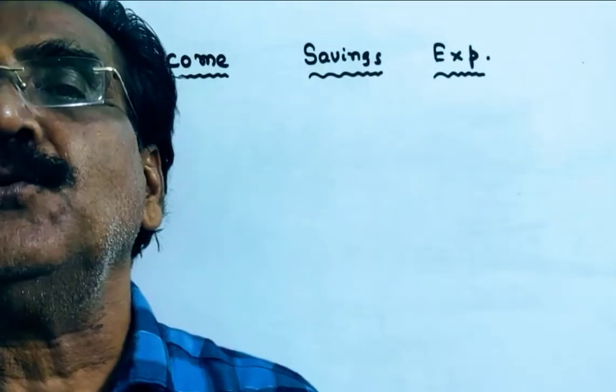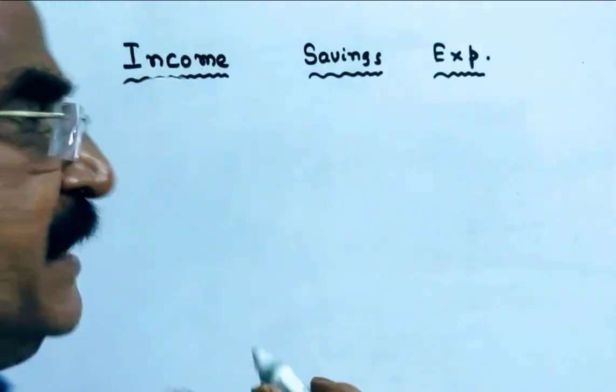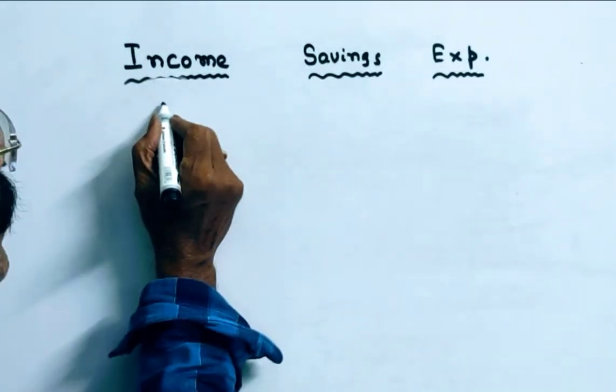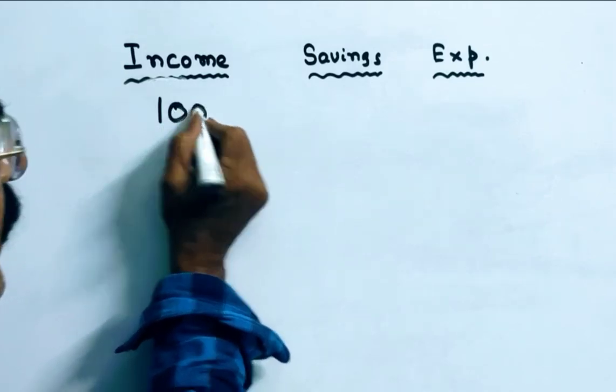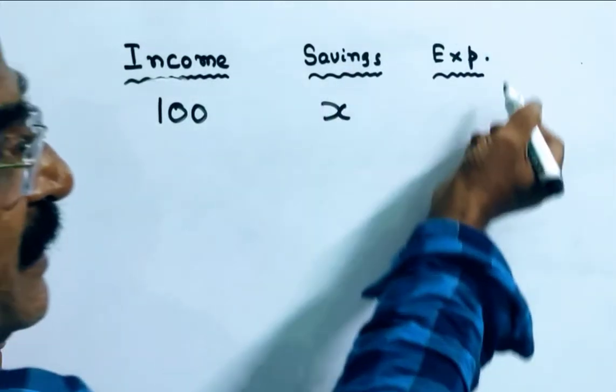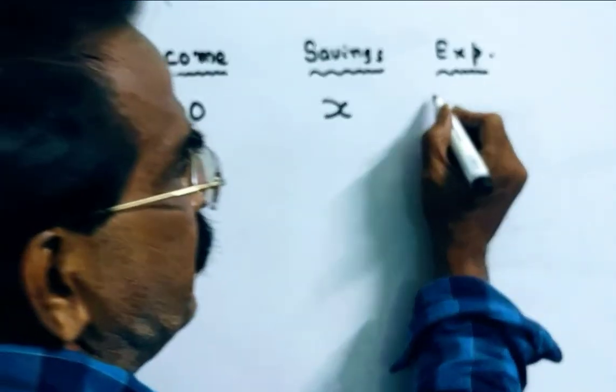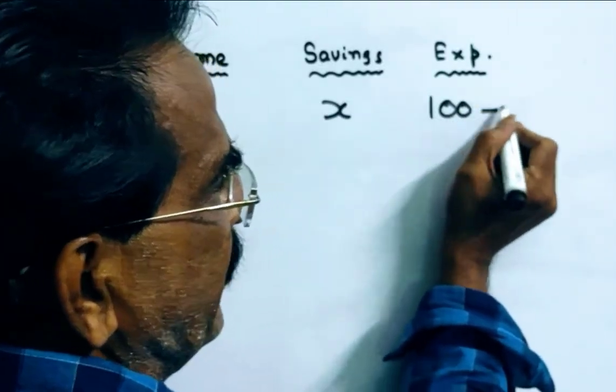Friends, Rishu saves X percent of his income. That means, if Rishu's income is 100, his savings will be X and his expenditure will be income minus savings is equal to expenditure. So, 100 minus X.